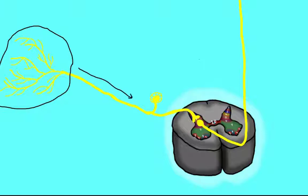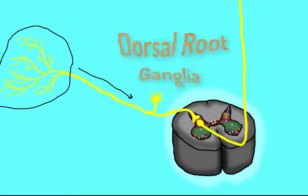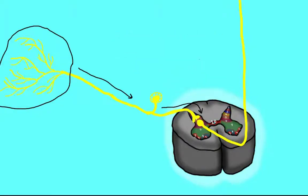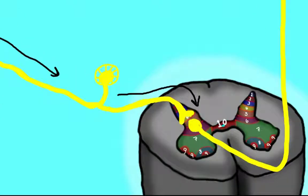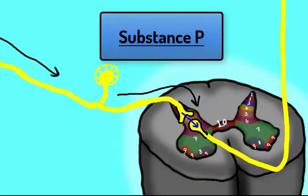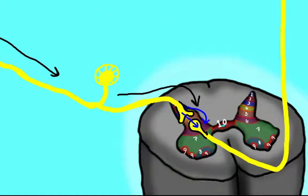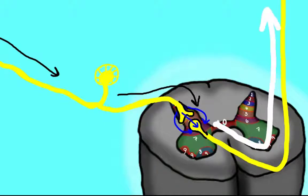In response to tissue injury, pain signals are initiated, having their cell bodies on the dorsal root ganglia. On the rexed lamina 2-3, the substantia gelatinosa, the first order neuron releases the neurotransmitter substance P to stimulate the transmission of pain signals on the second order neuron. The signal reaches the brain and other areas, and pain sensation is perceived this way.